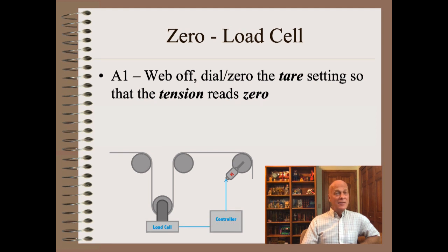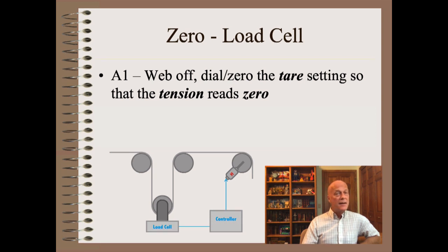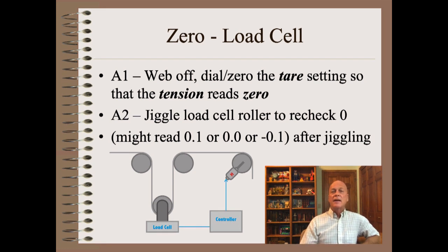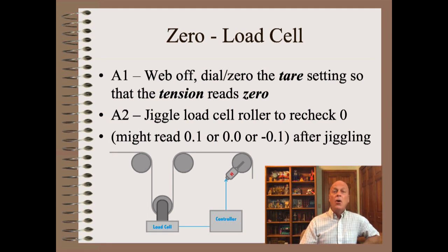Ready? So, this was pretty simple. We take the web off. Then, we find the zero or tare setting on the controller. We dial or set that zero or tare setting until the tension reads zero. Or was it that simple? Actually, there's a subtlety here that will become quite important for more complex upcoming examples. That is, the load cell mechanism and amplifier both have a tiny bit of hysteresis or friction. Thus, we should probably wiggle the load cell roller with our hand to see if the zero stays zero — perhaps within a couple of tenths. That variability is the friction, hysteresis or uncertainty of the electromechanical load cell system.